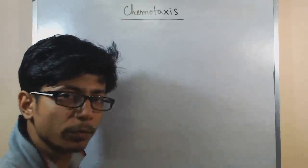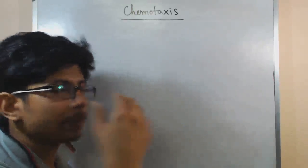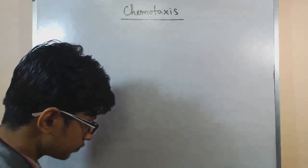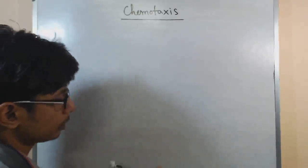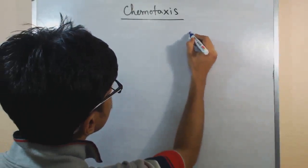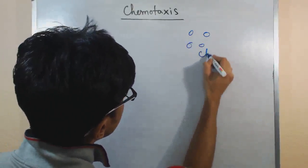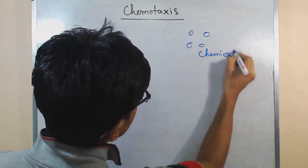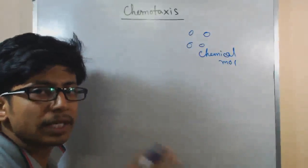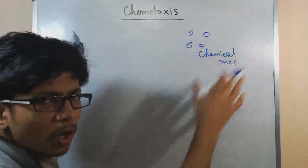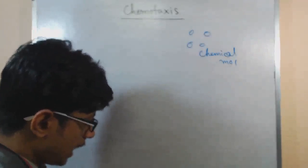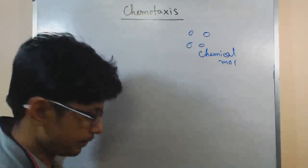The word 'taxis' means movement, so chemotaxis refers to movement based on a chemical gradient. In chemotaxis there are two things: one is the chemical molecules — let's say this is the chemical molecule — it can be a gradient or some chemical molecule spread out there. And there is an organism or a cell.